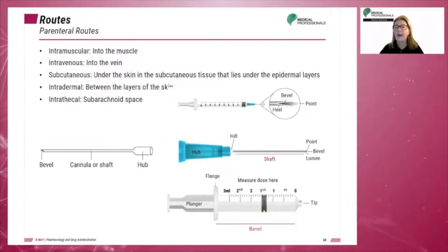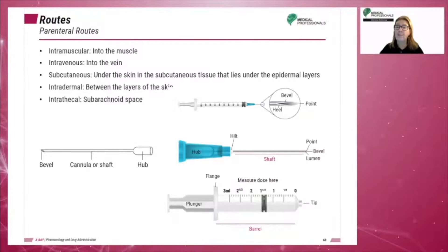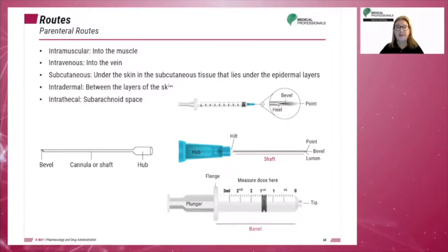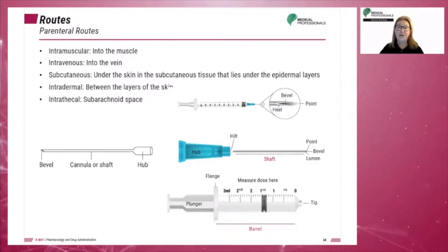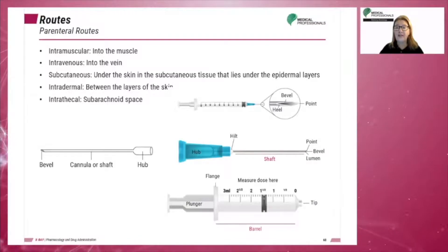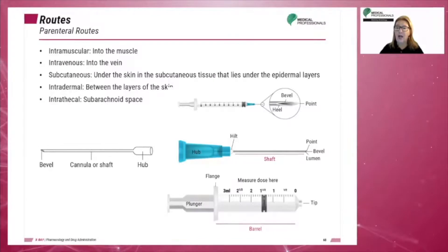Parenteral routes include intramuscular (into a muscle), intravenous (into a vein), subcutaneous (under the skin in the subcutaneous tissue beneath the epidermal layers), intradermal (between the layers of the skin), and intrathecal (into the subarachnoid space of the spinal column).